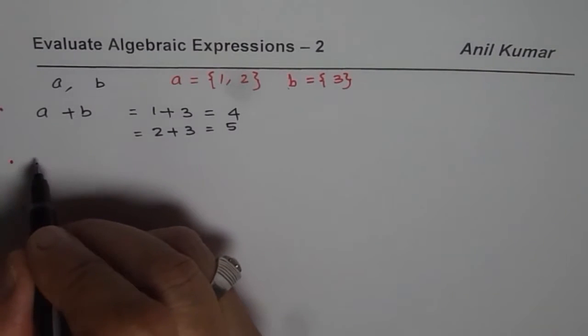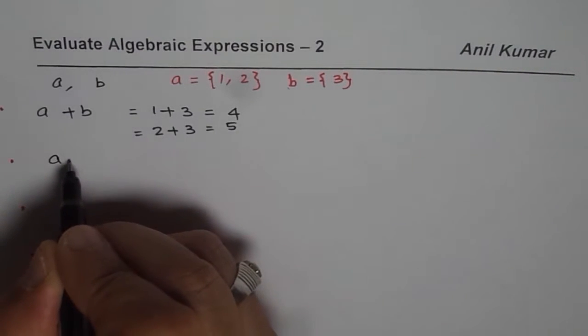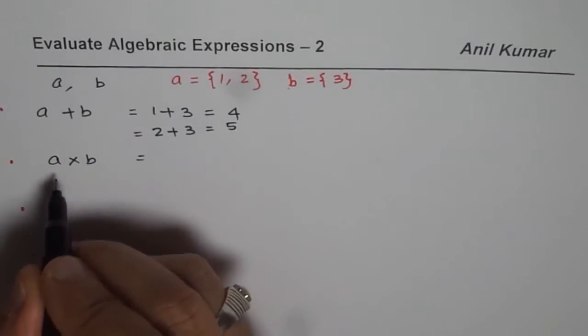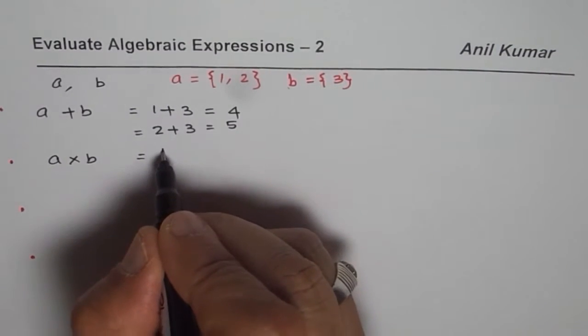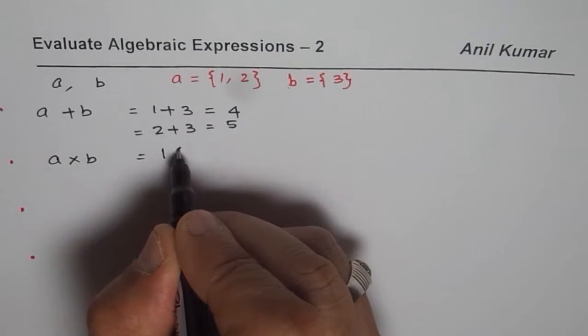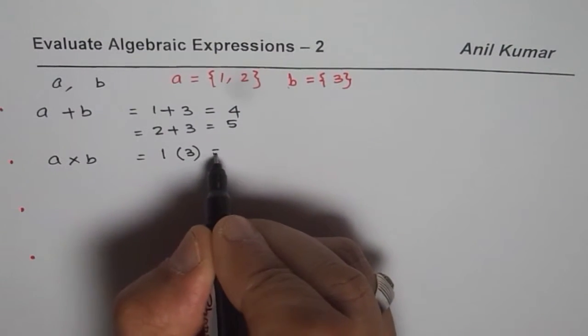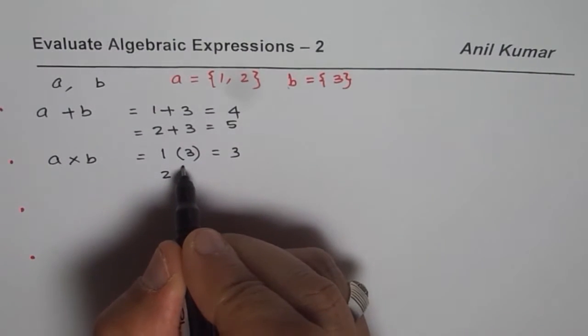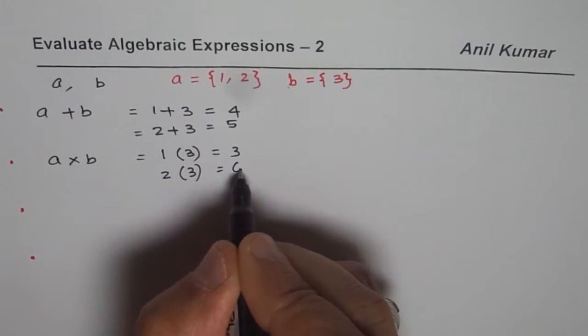Let us take the other set which is A times B. In this time, let us do this. So A could be 1 or 2. So that means 1 times, we could write in brackets also, it helps. 1 times 3 is 3 and then if I use 2 then I could get 2 times 3 which is 6.